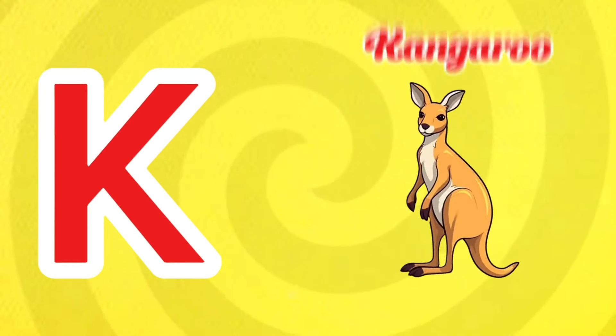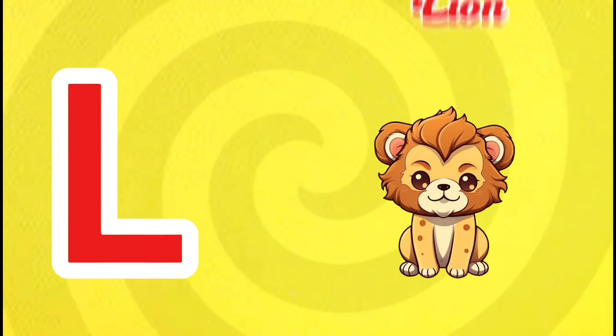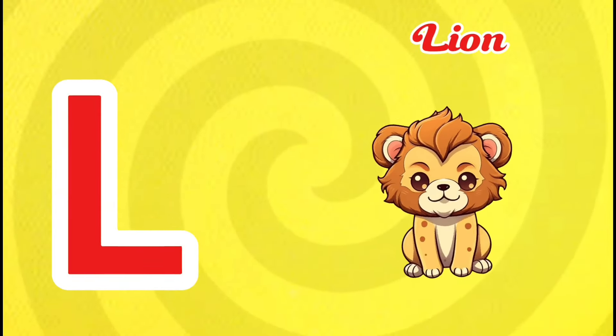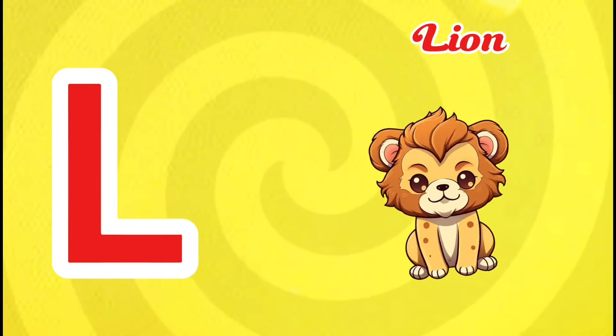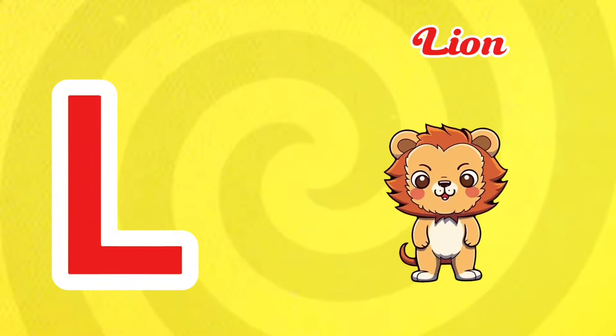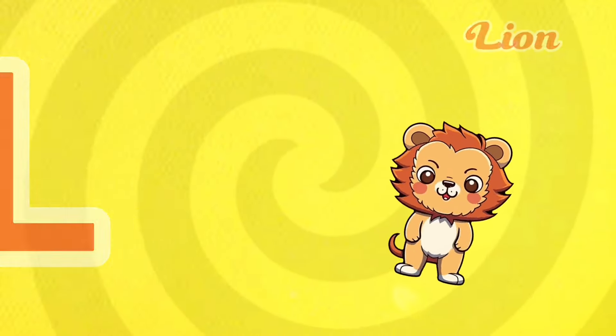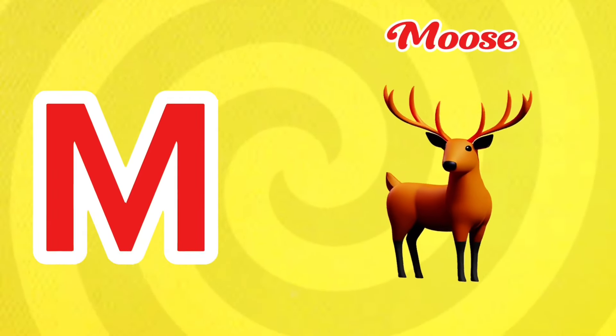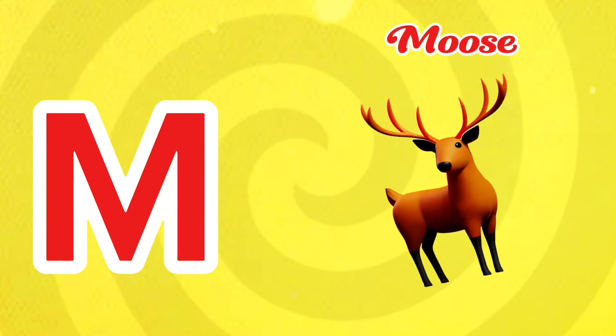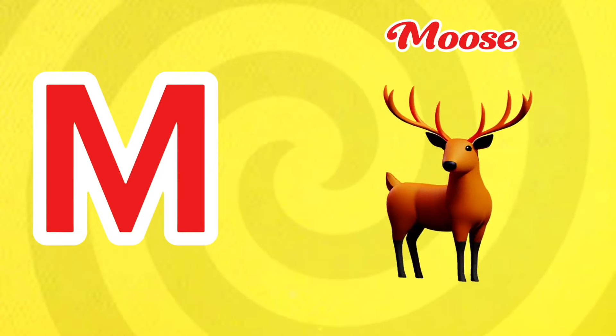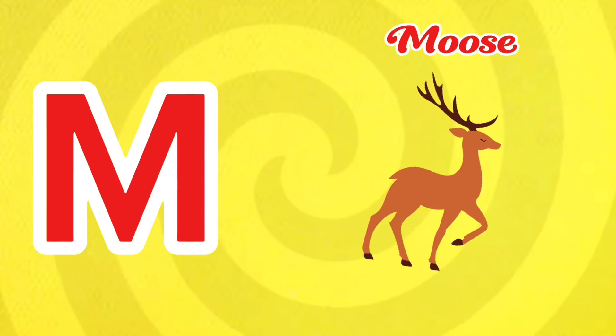K is for Kangaroo. C-c-kangaroo. K is for Kangaroo. C-c-c-c. L is for Lion. L-l-lion. L is for Lion. L-l-l-l. M is for Moose. M-m-m-moose. M is for Moose. M-m-m-m-m.